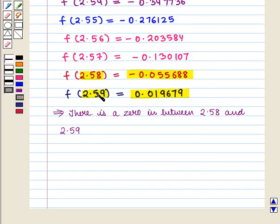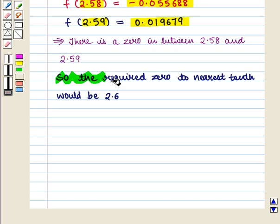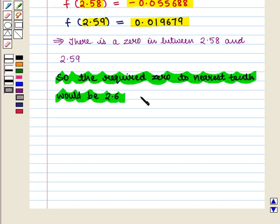Since it would be slightly above 2.58, so the required zero to the nearest tenth would be 2.6. This is the required answer. This completes our session.